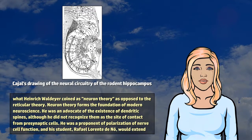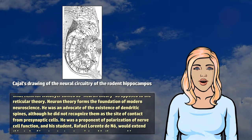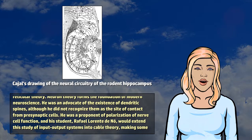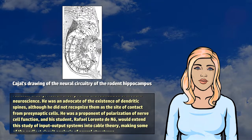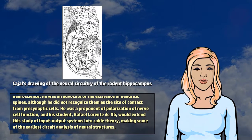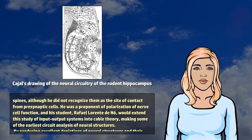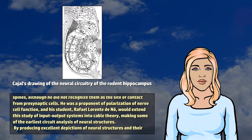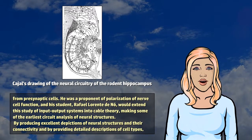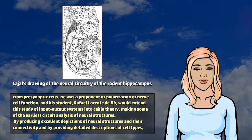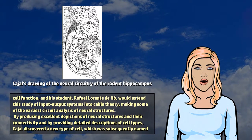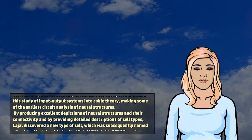He was an advocate of the existence of dendritic spines, although he did not recognize them as the site of contact from presynaptic cells. He was a proponent of polarization of nerve cell function, and his student Raphael Lorente de Noe would extend this study of input-output systems into cable theory, making some of the earliest circuit analysis of neural structures.